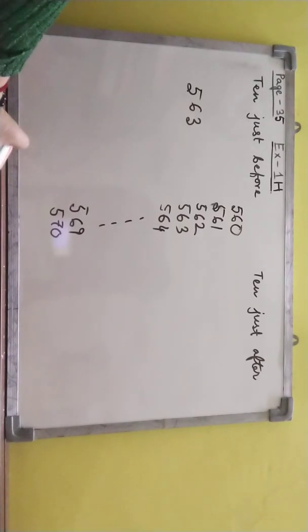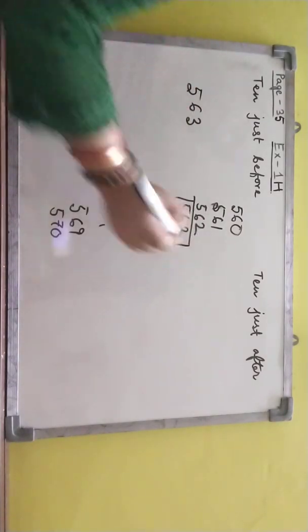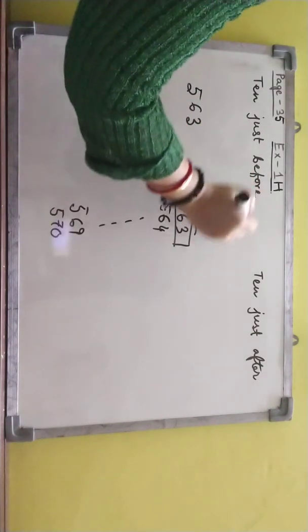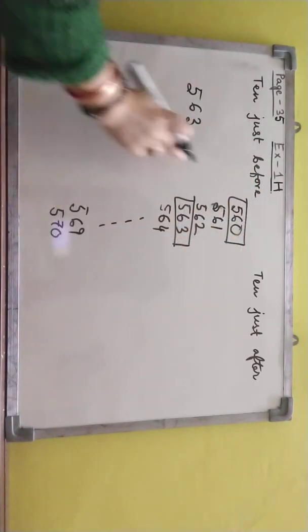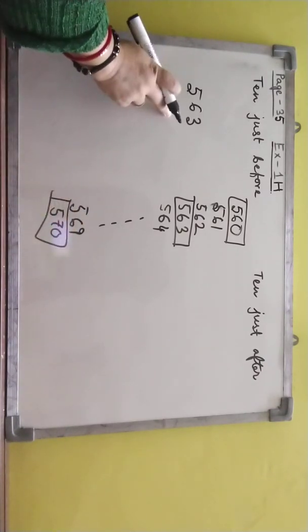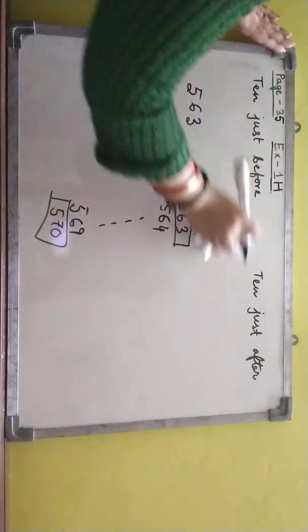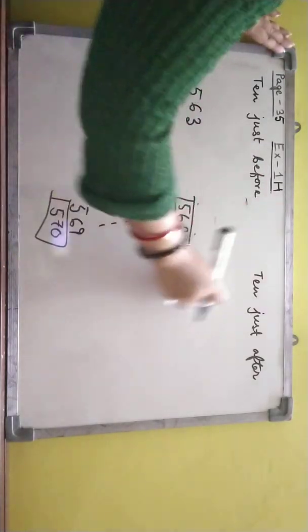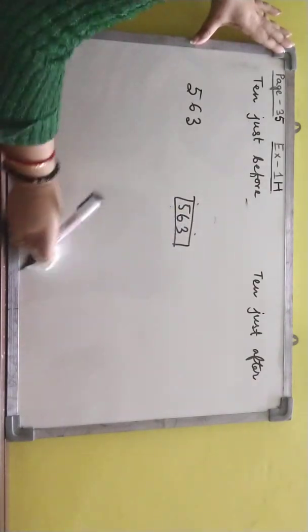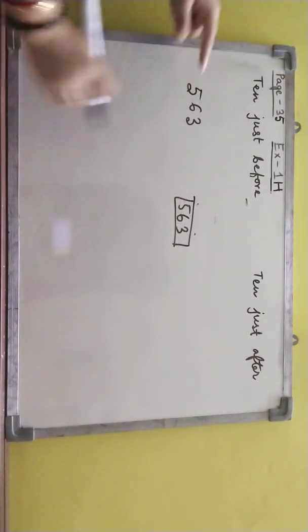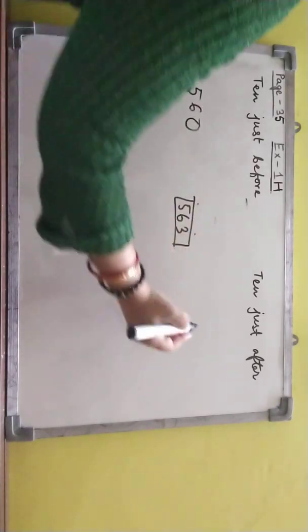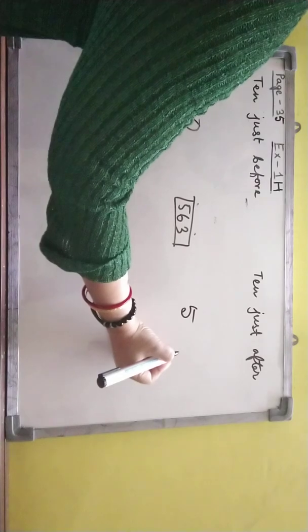Now 563, tens before means first number, tens after means last number. So for that 563, for the number 563, tens before means 560 and tens after means 570.